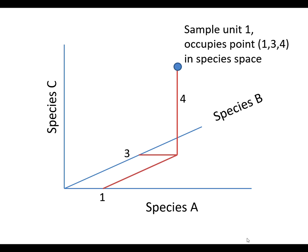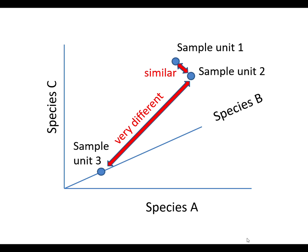Each sample unit defines a point in a high-dimensional species space where each axis represents the abundance of a particular species. Points that are close in species space are very similar communities, while points far apart have different communities.